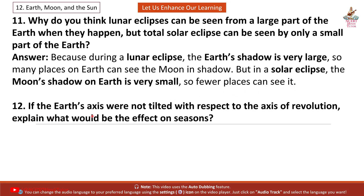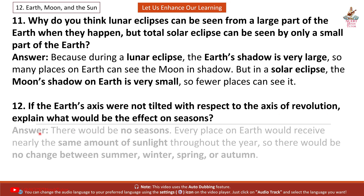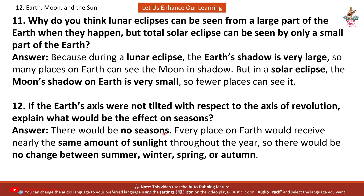Question 12. If the Earth's axis were not tilted with respect to the axis of revolution, what could be the effect on seasons? Answer: There would be no seasons. Every place on Earth would receive nearly the same amount of sunlight throughout the year, so there would be no change between summer, winter, spring, or autumn.